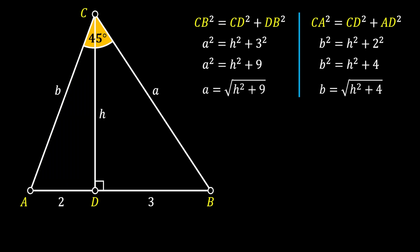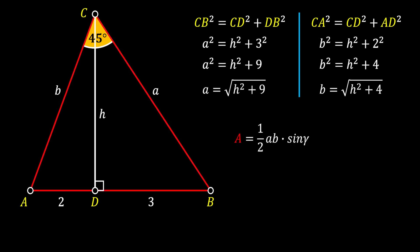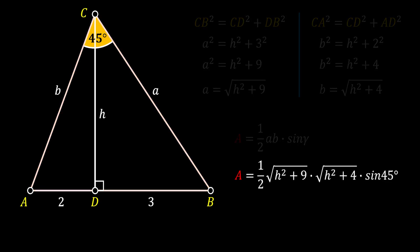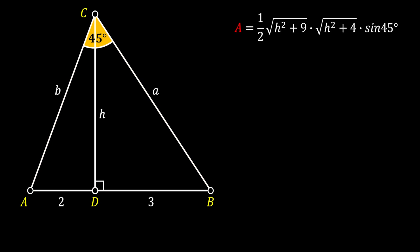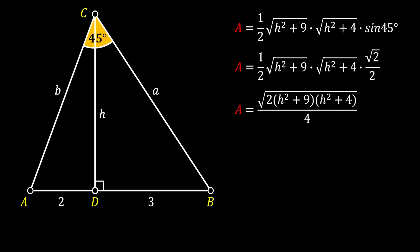Now we will use an interesting formula for the area of a triangle, which states that the area equals one-half of the product of two sides and the sine of the angle between those sides. Substituting the values of A and B and the 45-degree angle between them, we get the following equation. Since sine of 45 degrees is √2/2, we can simplify, and multiplying the values under the square root gives us a further simplified expression. We also know the area equals one-half of the base times the height, so with base 5 and height H, the area is 5H/2.